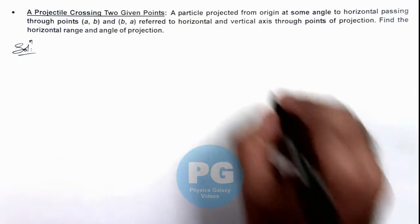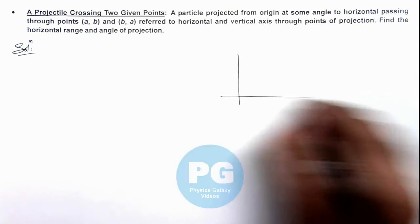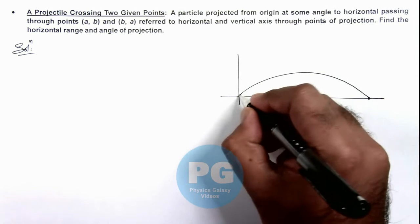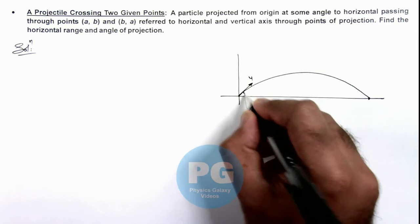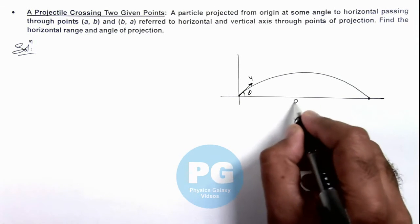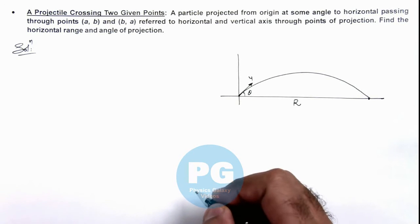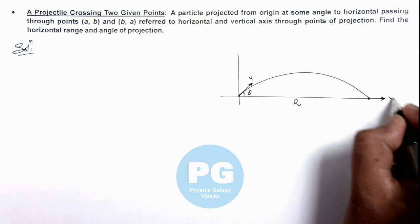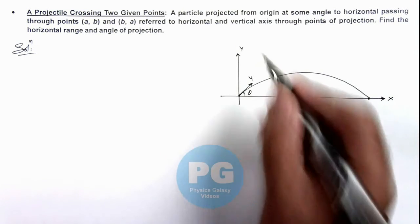Here, if we just analyze, there is a projectile which is following projectile trajectory with initial speed u and projected at angle theta. Then in this situation if R is the range of this projectile motion, and we refer horizontal as x axis, vertical as y axis, in this situation we can write equation of trajectory of